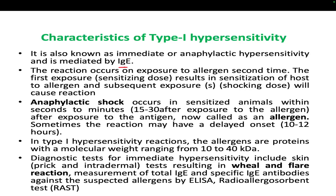In Type 1 hypersensitivity, the allergens are basically proteins with a molecular weight ranging from 10 to 40 kilodaltons. Pollen grains can also cause Type 1 hypersensitivity. In simple terms, it is a kind of allergic reaction — for example, a bee sting causes inflammation, which is a form of Type 1 hypersensitivity. Some people have allergy toward pollen grains. If the body shows response at a particular location within 15 to 30 minutes, it is called anaphylactic hypersensitivity.